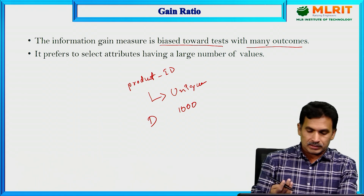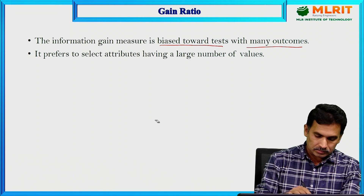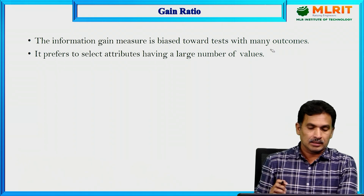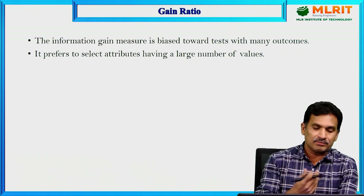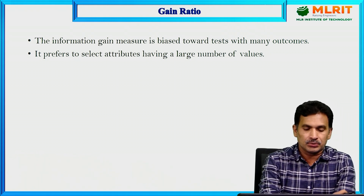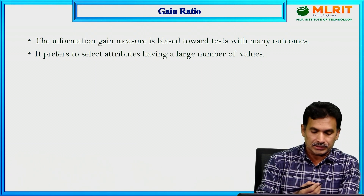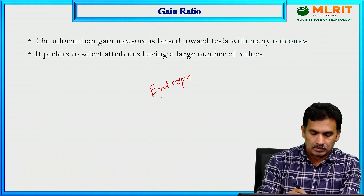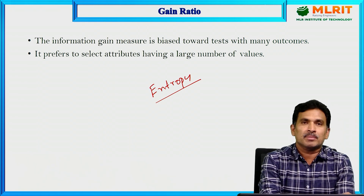Let us quickly recall an important concept for understanding this — that is classification. Why do we use information gain, gain ratio, or Gini index? As we already discussed in the previous lecture, entropy is the measurement of uncertainty.